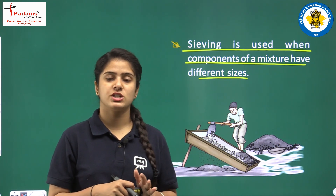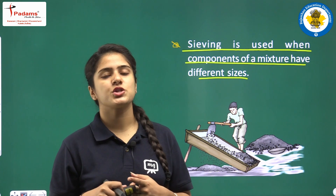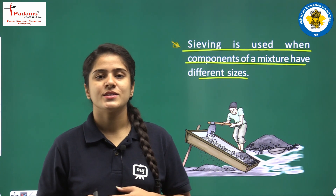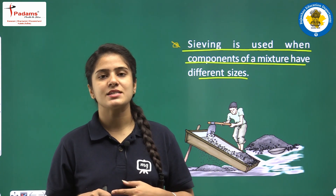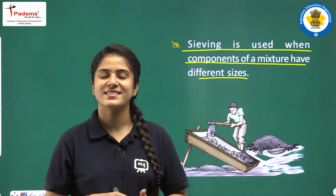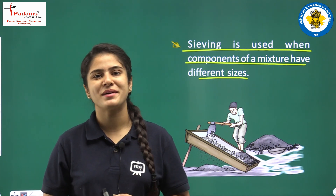So students, today we discussed four methods of separation: hand picking, threshing, winnowing, and sieving. In the next class we'll discuss some more methods. Till then, do study at home. Bye!